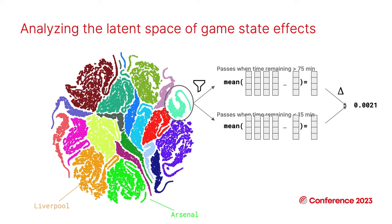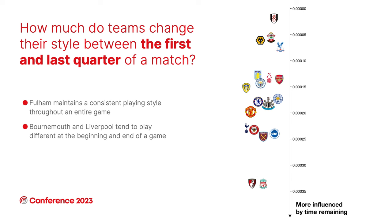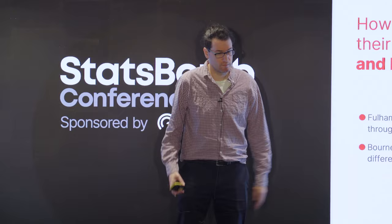The first question we looked at is how much do teams change their style between the first and last quarter of the match — first 15 minutes versus last 15 minutes. Most stable is shown at the top, least stable at the bottom. Fulham maintains a consistent playing style throughout the entire game. On the other end of the spectrum, Bournemouth and Liverpool tend to play differently at the beginning versus the end of the game, with other teams falling somewhere in between.